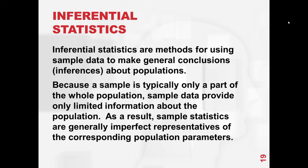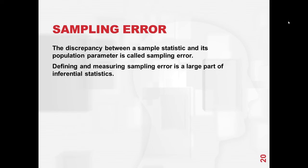As a result, sample statistics are generally imperfect representatives of the corresponding population parameters. The discrepancy between a sample statistic and its population parameter is called sampling error. Defining and measuring sampling error is a large part of inferential statistics.